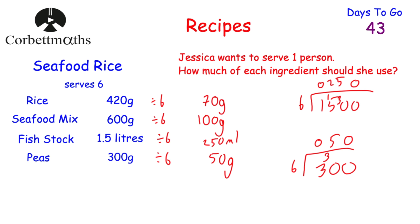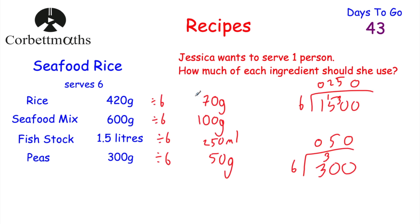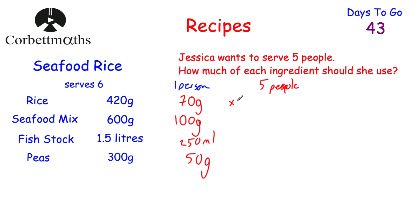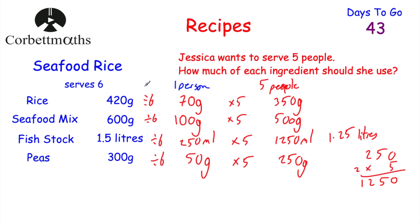Now we're asked how much she needs to serve five people. Since we know how much is needed for one person, we just multiply each of those numbers by five: 350g of rice, 500g of seafood mix, 1,250ml (or 1.25 litres) of fish stock, and 250g of peas. So to find how much you need for five people, divide each quantity by six to find one person's share, then multiply by five.